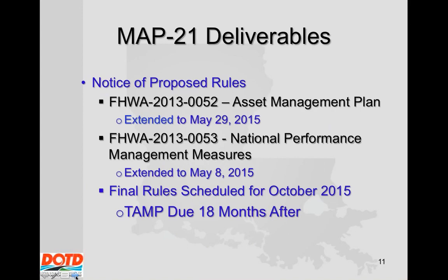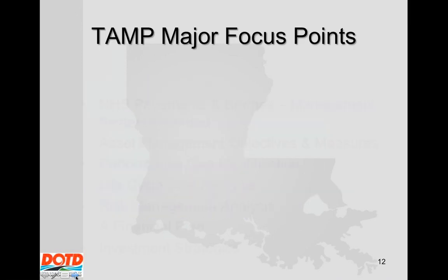The notice of proposed rules are out right now. Two rules affect us: the asset management plan rule (052) directly about the TAMP, and 053, the national performance management measures. These are extended to May and are very complex — 248 pages — and require substantial comments. The final rules for 053 are due in October, and the TAMP rules are probably out in November. The TAMP itself is required and due 18 months after that.